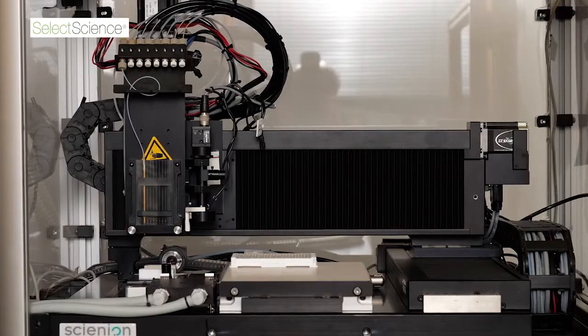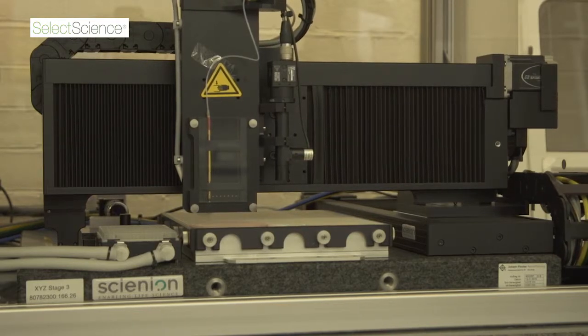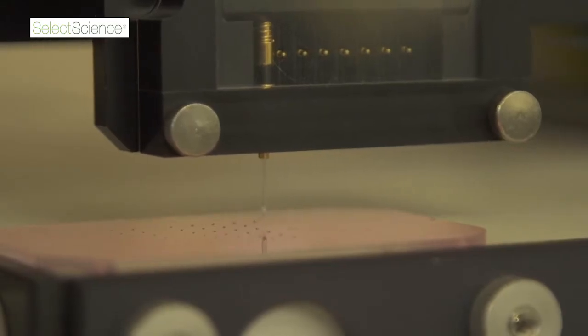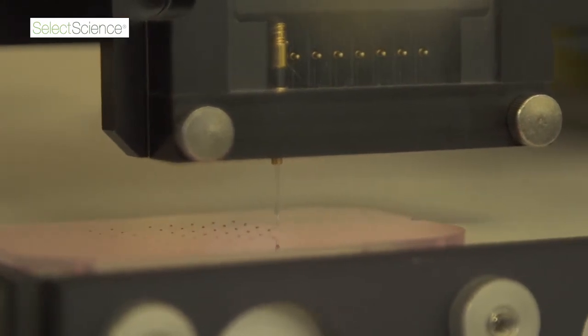The key benefits of the Sci-flex is the reproducibility because it allows us to dispense with high precision sub-nanoliter amount of liquid on our substrates. It's also a non-contact printing mode, which is very important for the devices we are trying to develop.